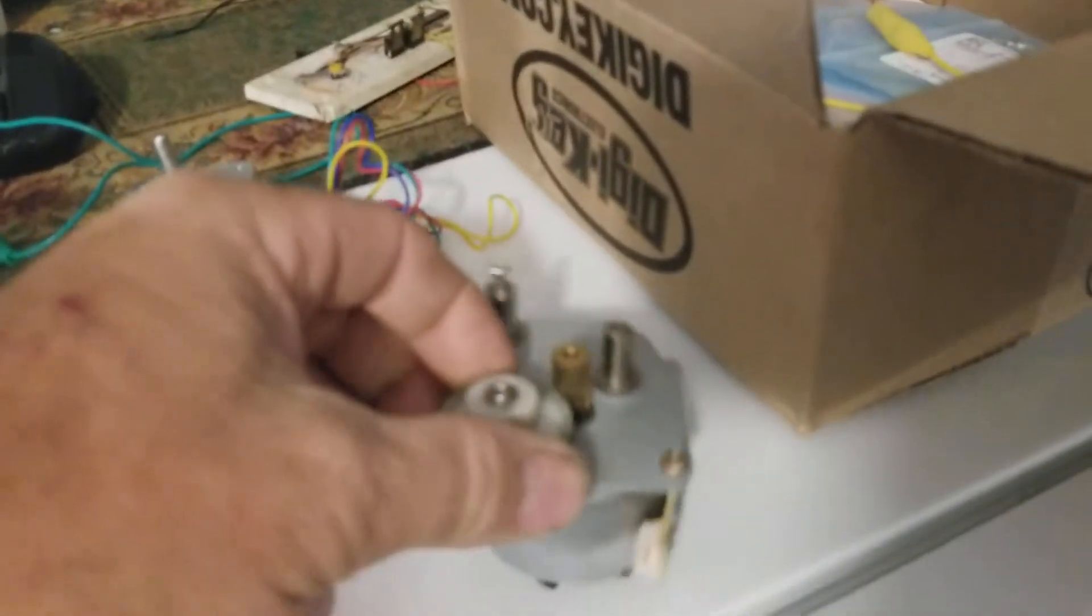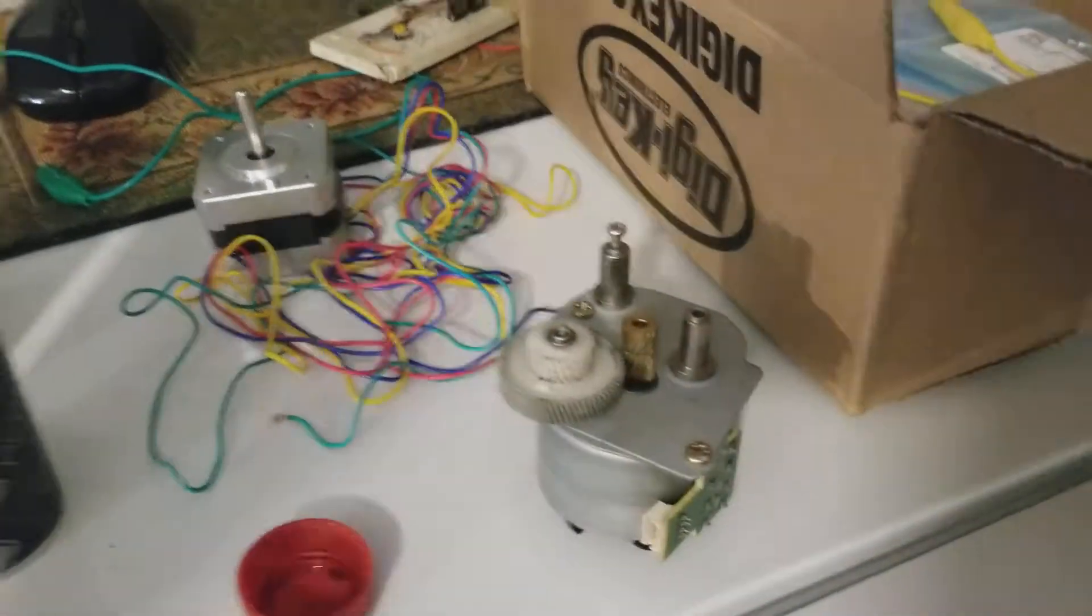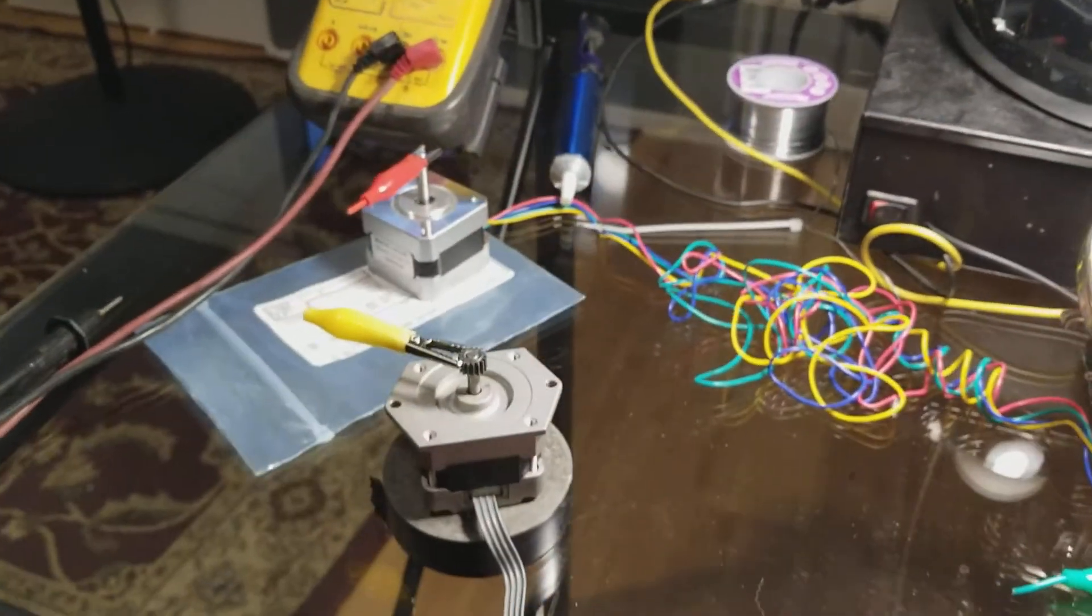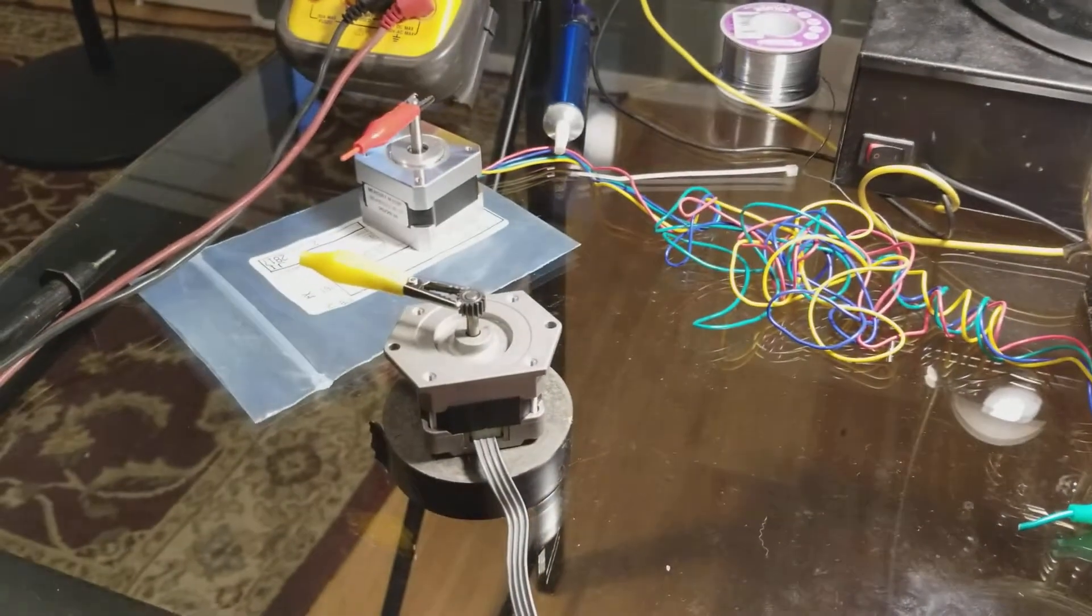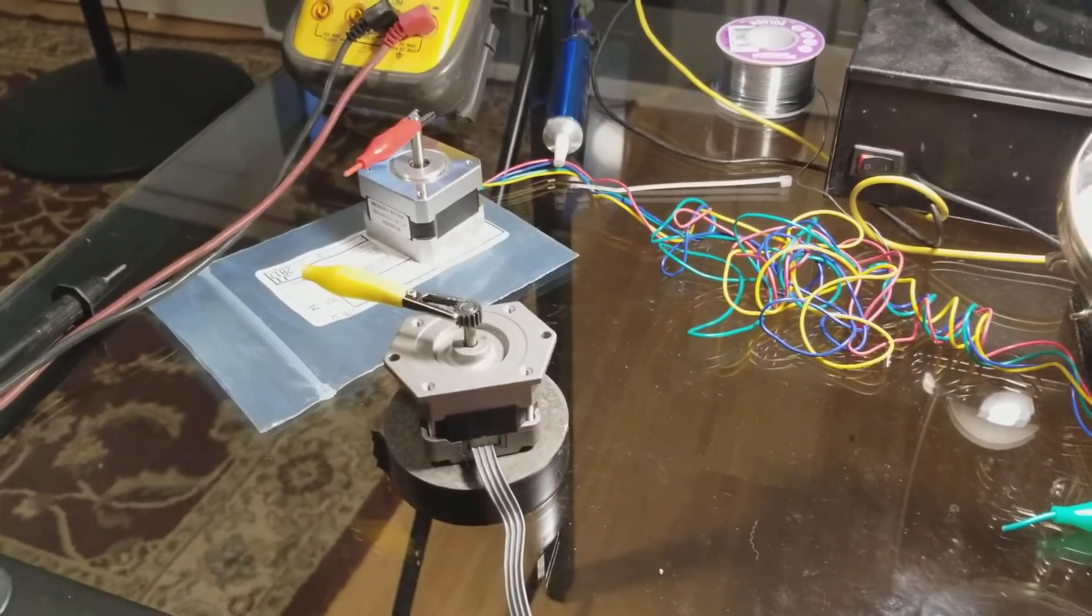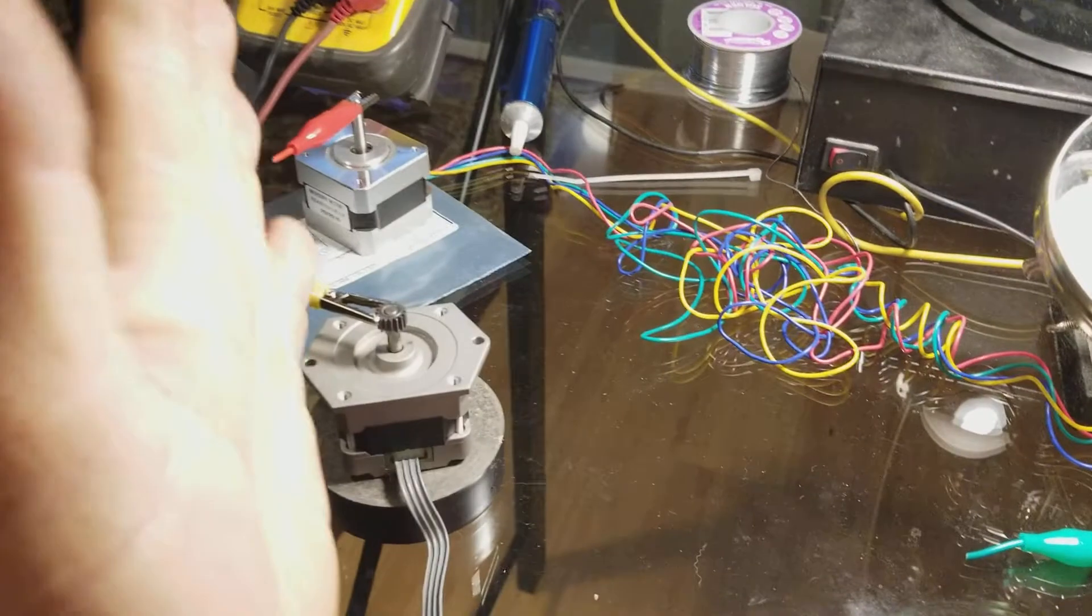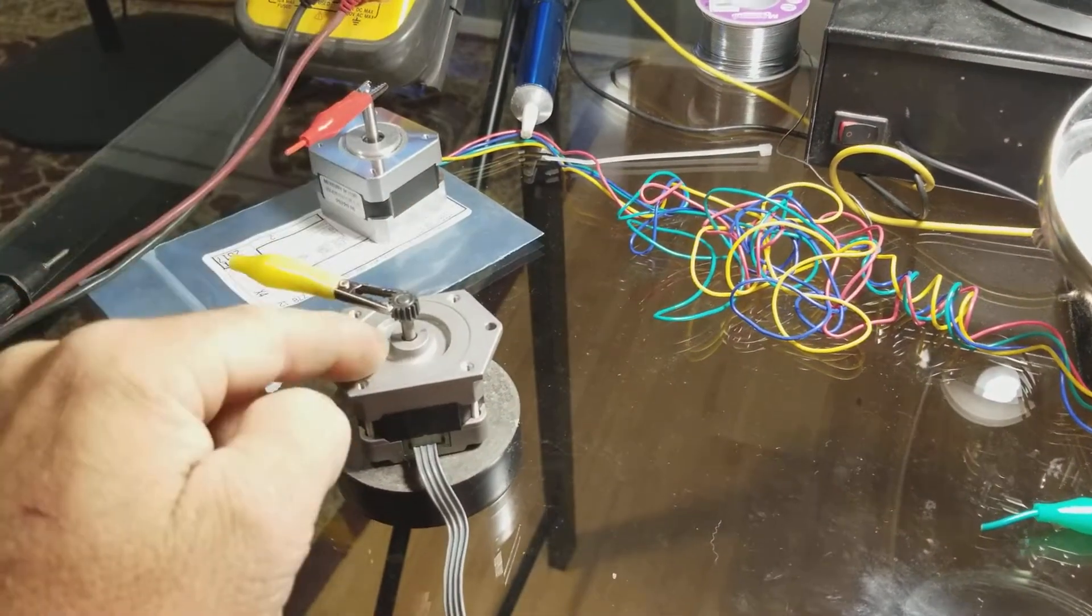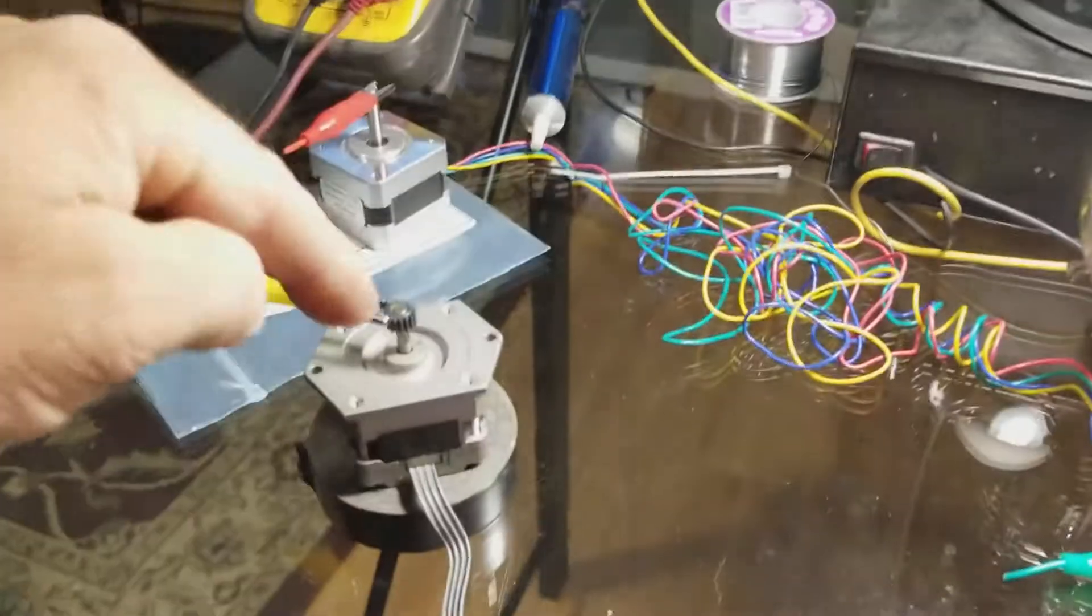I bought a couple of those stepper motors plus I have a bunch of used ones out of printers and stuff. This one has gear reduction which will give it a lot of torque and a lot of precision. So those not familiar with such a thing, it's not like a regular motor where you just put power and it just spins. It's actually two poles and each pole is like 1.8 degrees apart I think on this one.